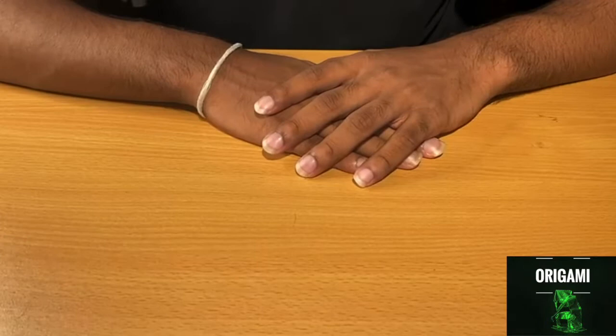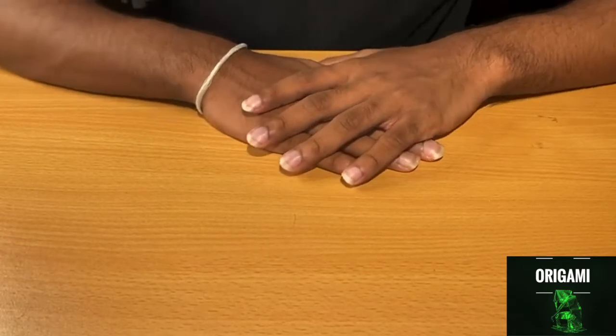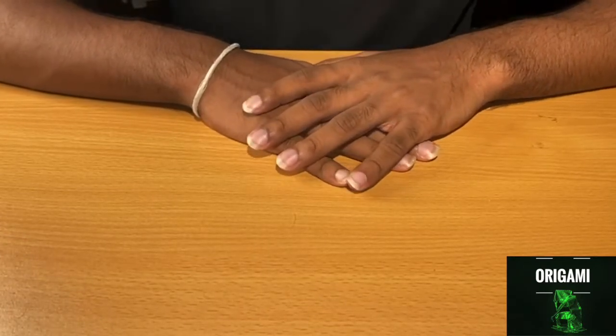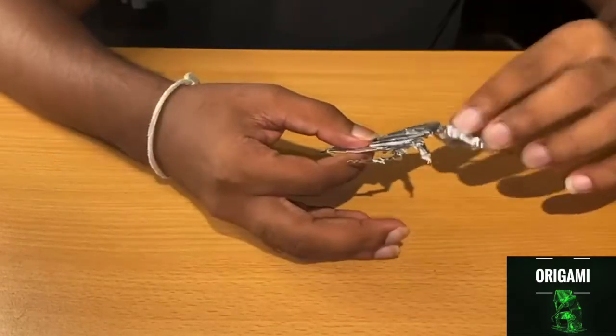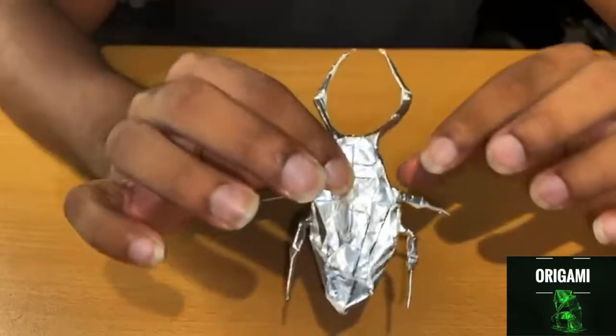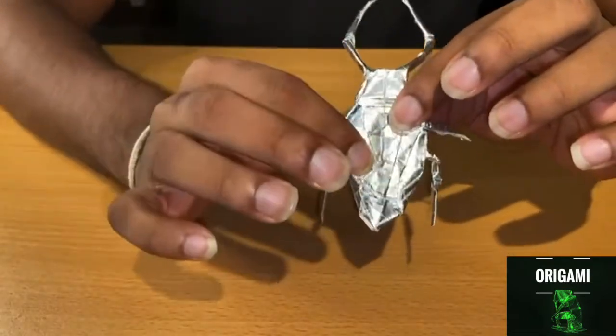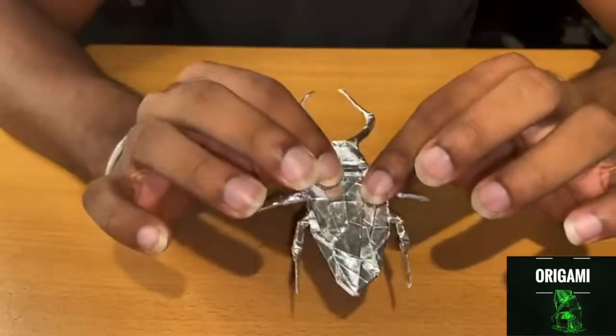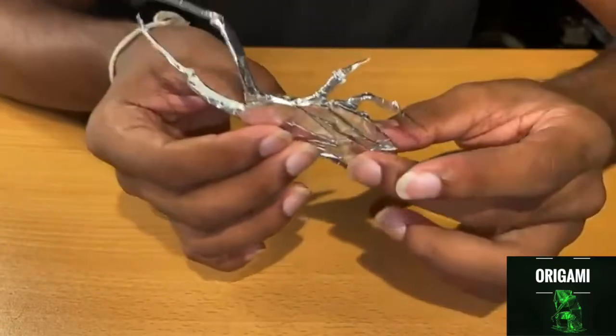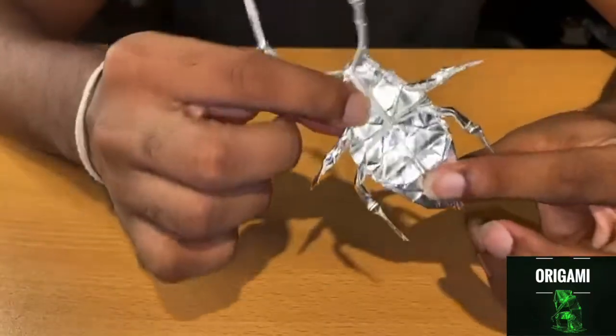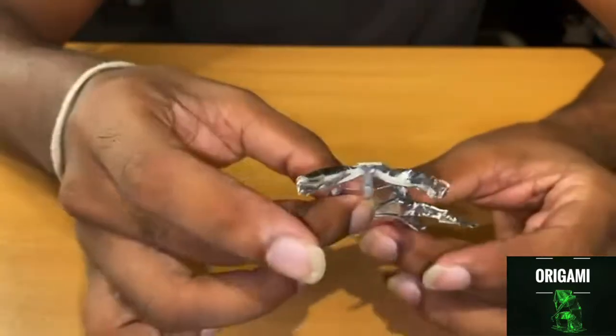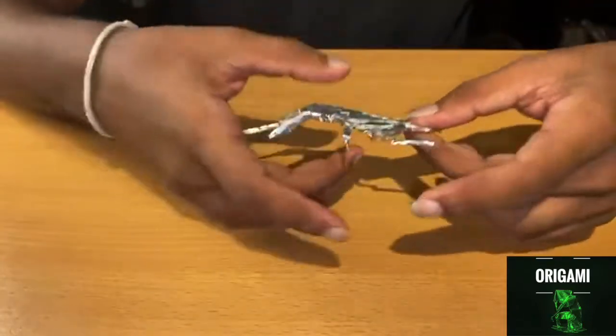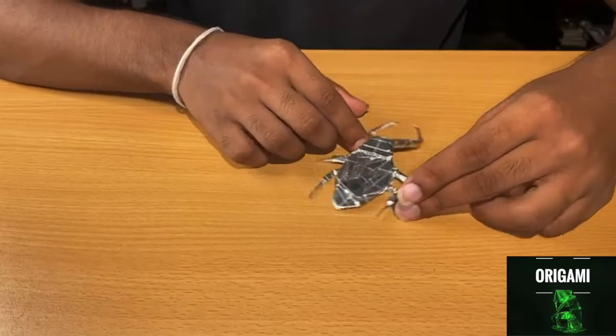And to end today's video, I have one last model for the complex origami, and it's going to be this beetle right here. Personally, this was my favorite one from the complex category. It has over a hundred folds and you can pay attention to the details. It has the two horns. Let me get a better view for you guys so you can see better.